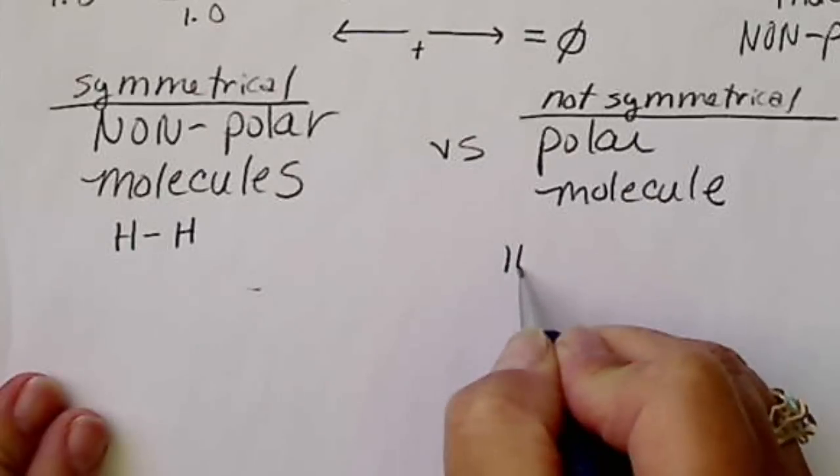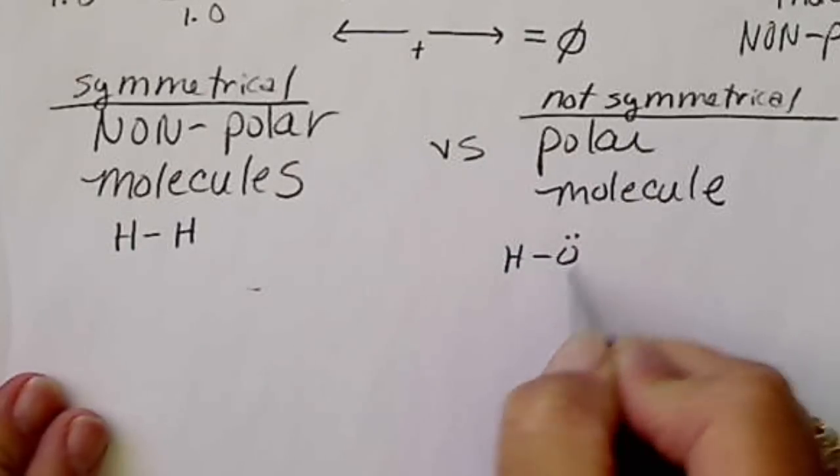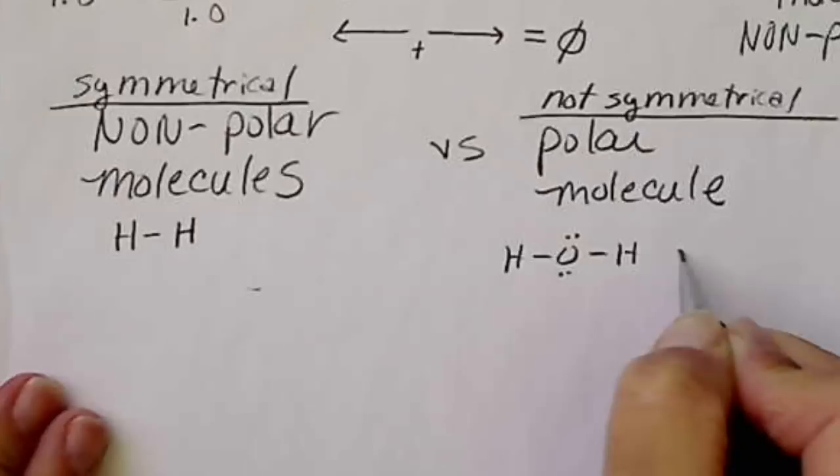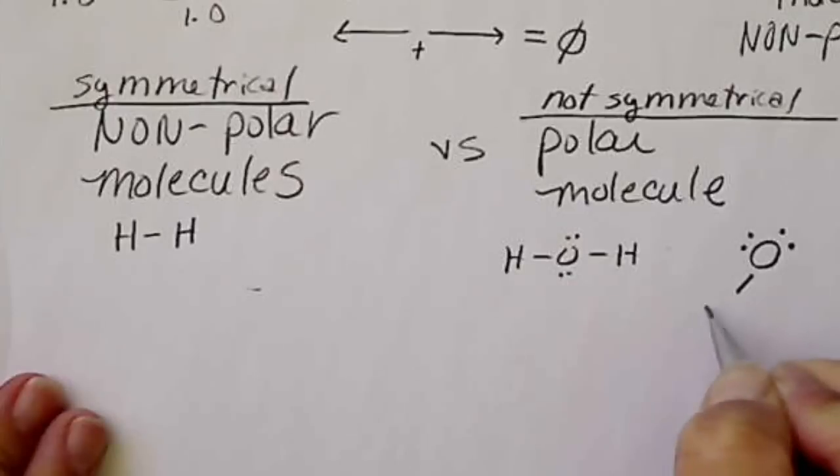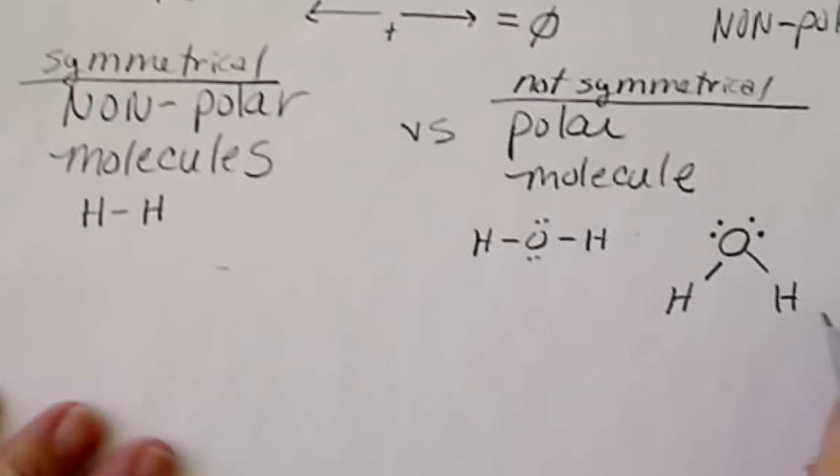Water, we might draw water so that it looks perfectly symmetrical, but in reality, water really looks like this. It's bent, so those lone pairs make the molecule somewhat lopsided.